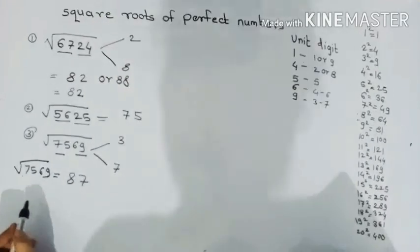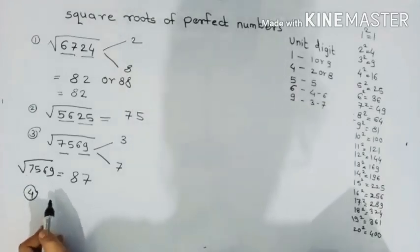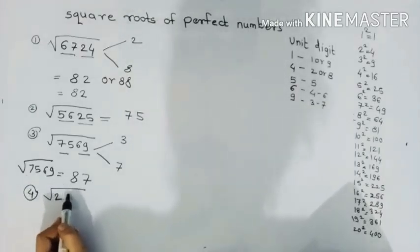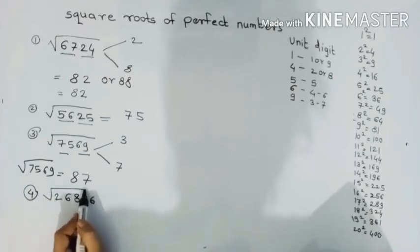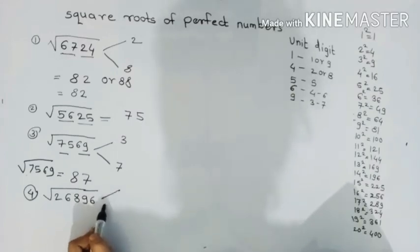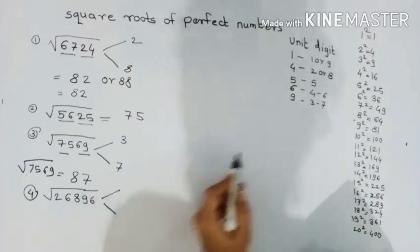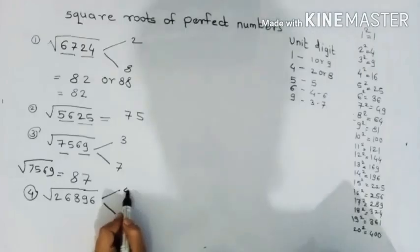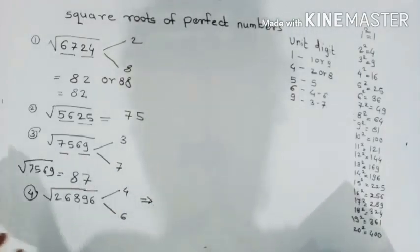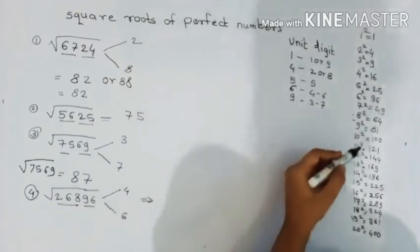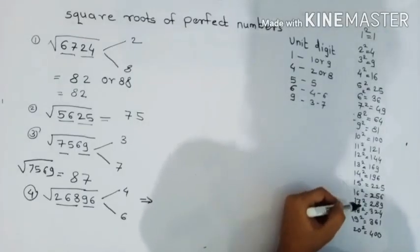Now let's take an example and try it a little bit: 26896. So it's also 6, so it's also 2 possibilities, either 4 will be the last digit or 6 will be the last digit. What do we need to do now? Let's divide the two parts. How many numbers are between 268, how many numbers are between 16 and 17?